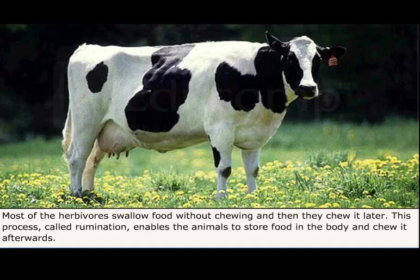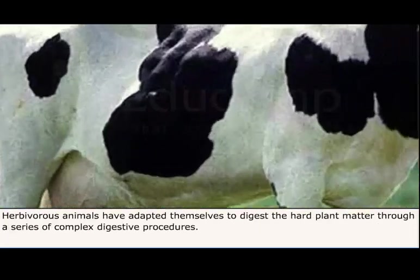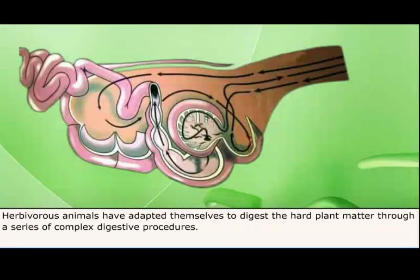Most herbivores swallow food without chewing and then chew it later. This process, called rumination, enables the animals to store food in the body and chew it afterwards. Herbivore animals have adapted themselves to digest hard plant matter through a series of complex digestive procedures.